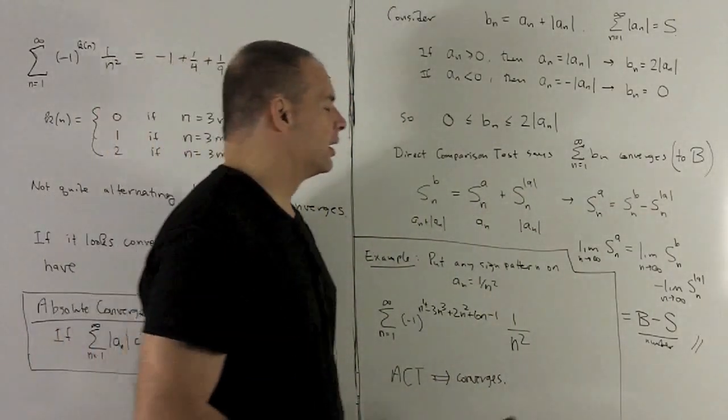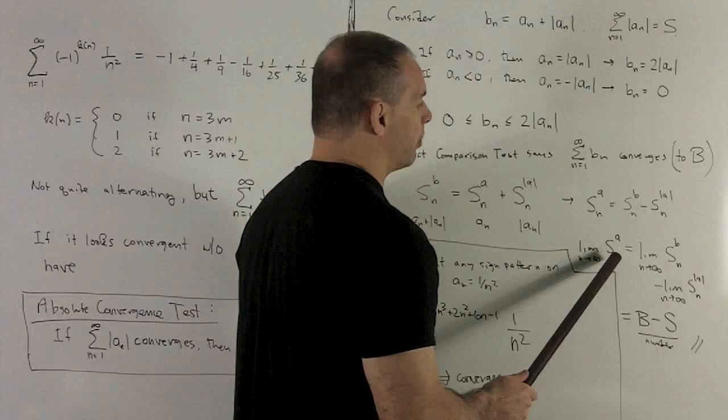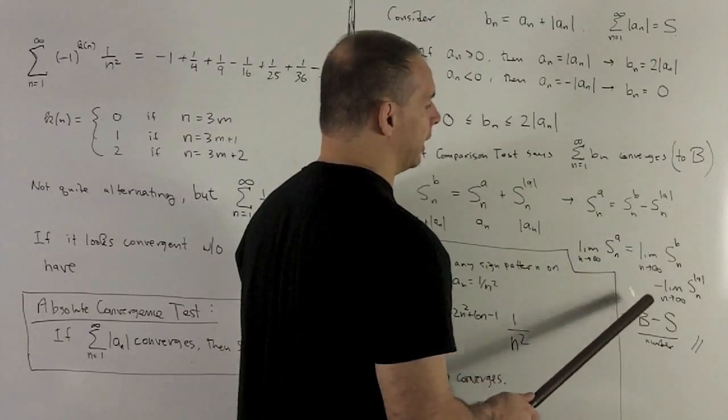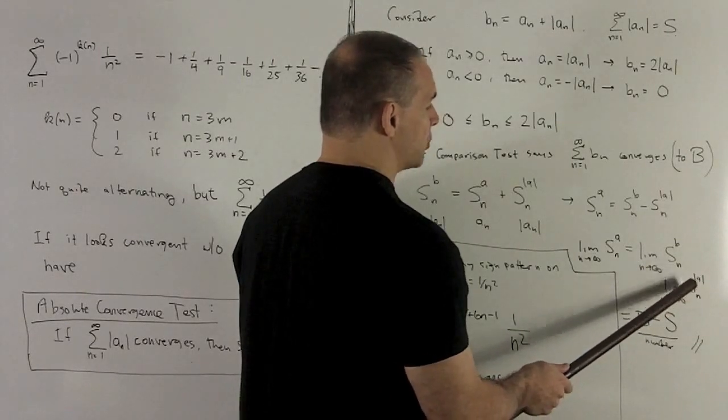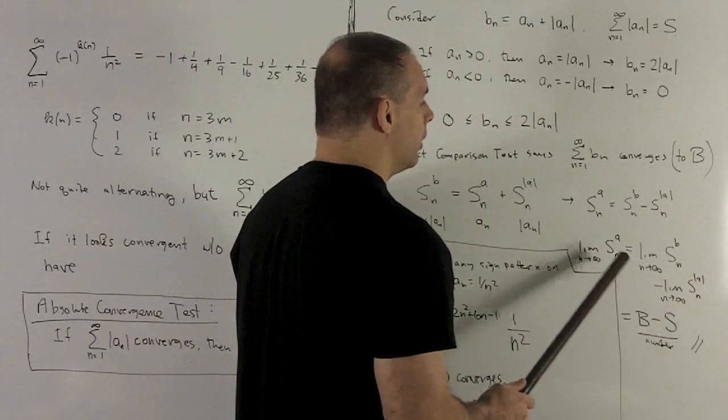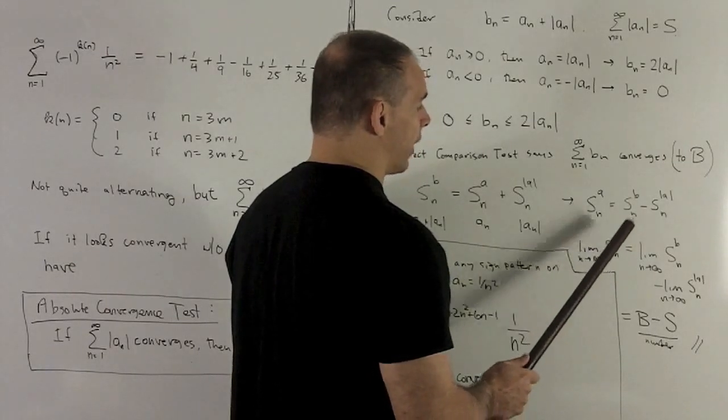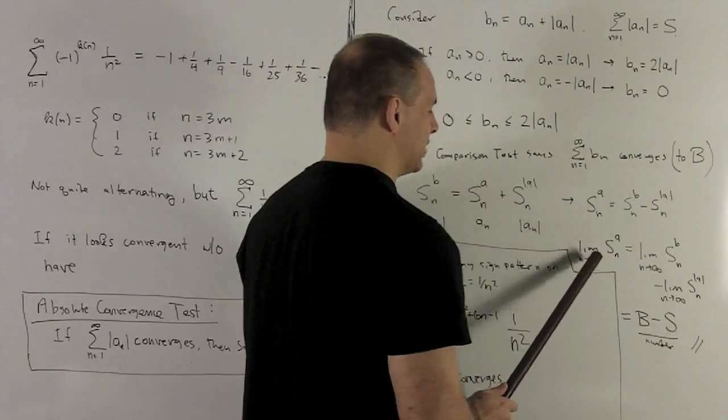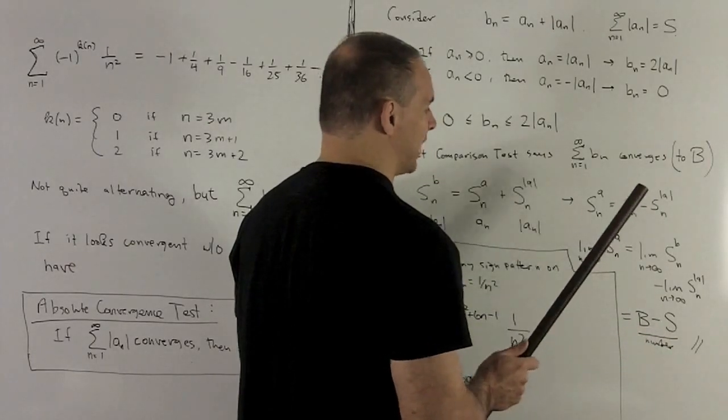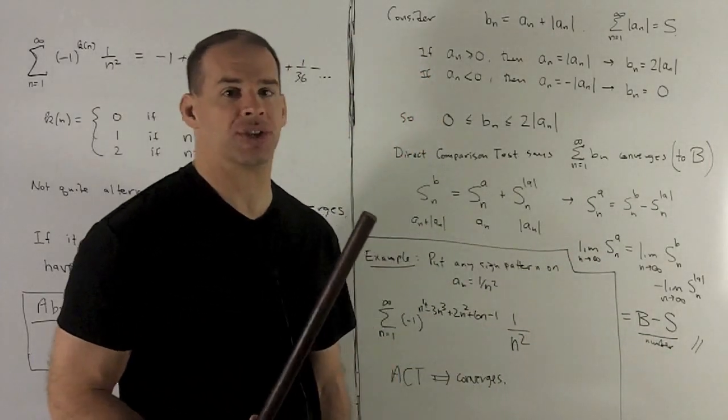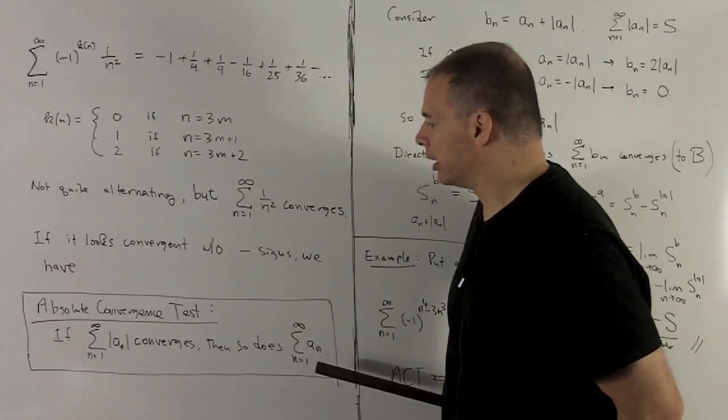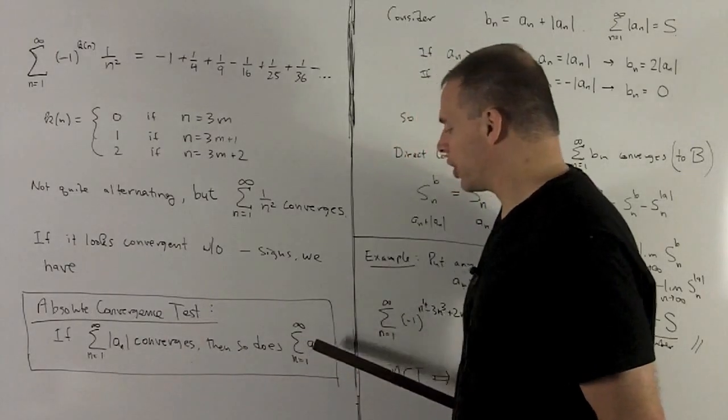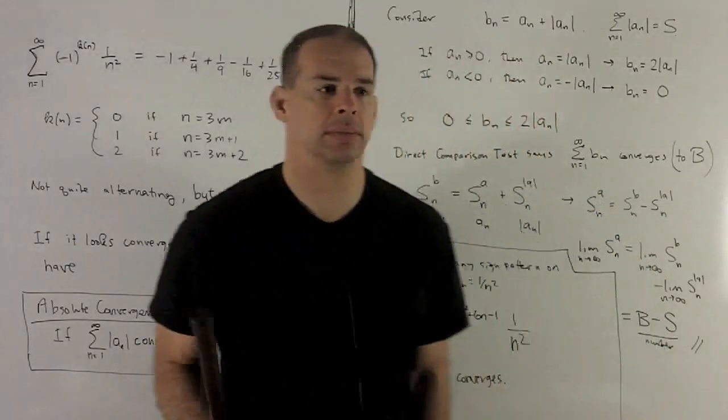I'm going to have partial sums for a is partial sums for b minus partial sums for absolute value of a. Take the limit of both sides. This is the thing that we're interested in, the partial sums for a. We know the partial sums for b converges to b. Partial sums for absolute value of a are going to converge to s. And so the partial sum for a, its limit is going to go to b minus s, which is a number, which means the series associated to a sub n is going to converge also. And that's our conclusion here. So if you can get it to converge by throwing away the signs, then it will converge with the signs.